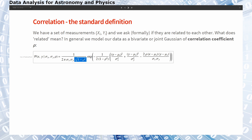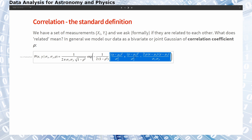If rho is close to 1, the denominator becomes a very small number, which makes the whole exponential larger. We have to be careful because this term has a negative sign, so if the deviation of x values and the deviation of y values are in opposite directions, this increases the value of the parenthesis.